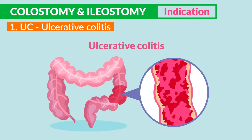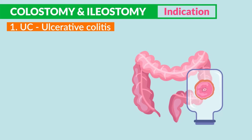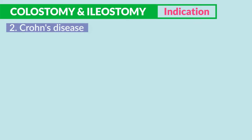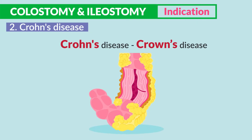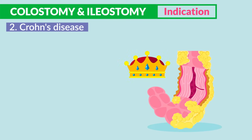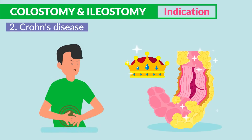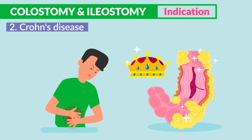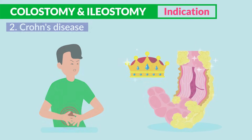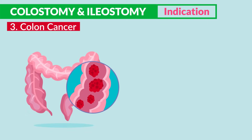Inflammatory diseases like ulcerative colitis (UC), where we have bleeding ulcers inside the intestine, are a common indication. An ileostomy or colostomy is created to help bypass the areas causing trouble. Even Crohn's disease — characterized by lumps and bumps like the jewels of a crown all over the GI tract — causes massive inflammation and pain and is another indication.